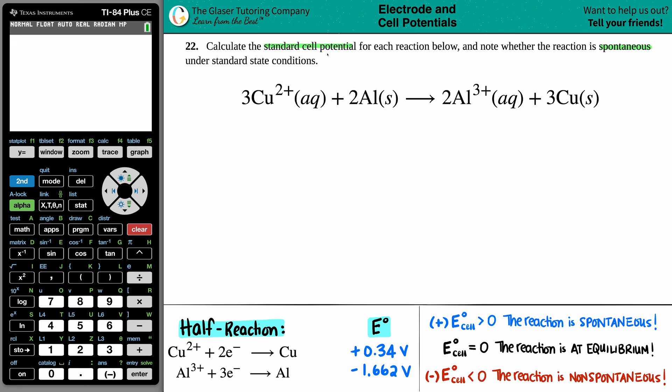Now we want to find out that standard cell potential. That's an E cell. Specifically it's like an E naught cell because the naught represents that we are under standard conditions and that's what they ask for, the standard cell potential.